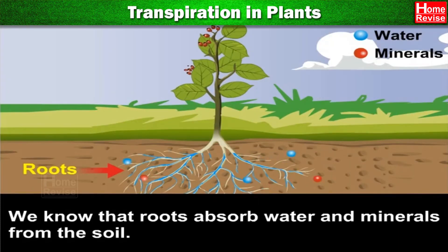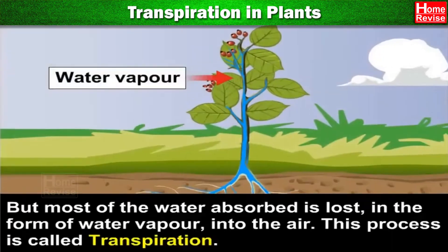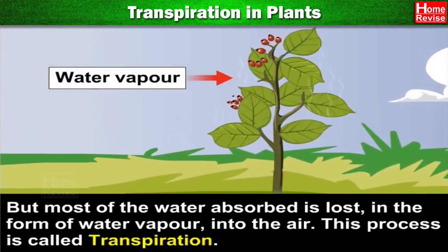Transpiration in plants. We know that roots absorb water and minerals from the soil. But most of the water absorbed is lost in the form of water vapor into the air. This process is called transpiration.